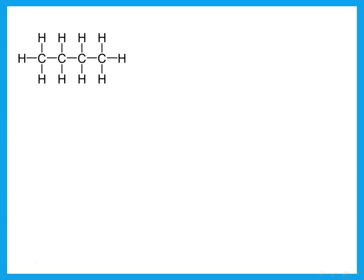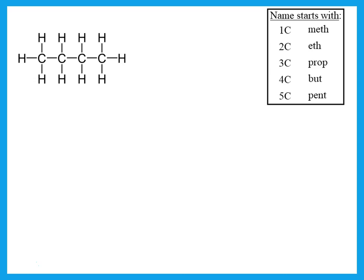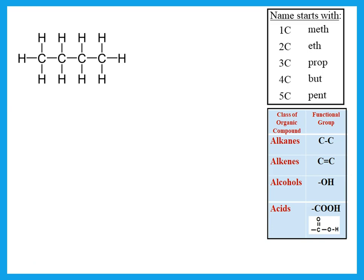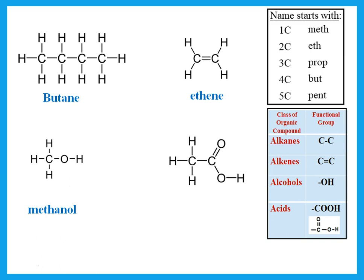More examples: four carbons with only single bonds = butane. Two carbons with a double bond = ethene. One carbon with –OH = methanol. Two carbons with –COOH = ethanoic acid. Please practice drawing all of these structures — both from name to structure and structure to name.